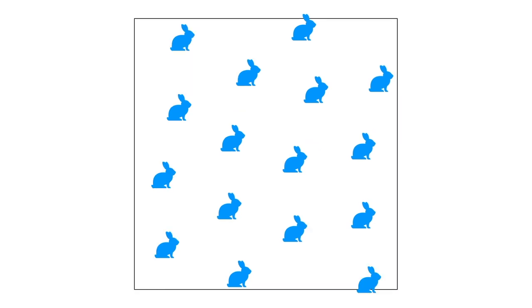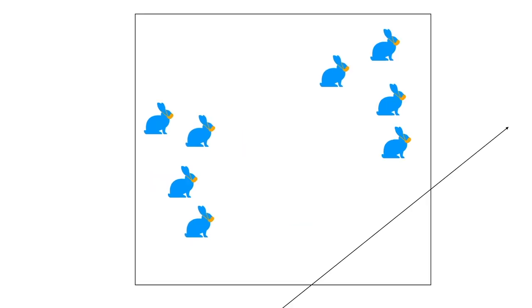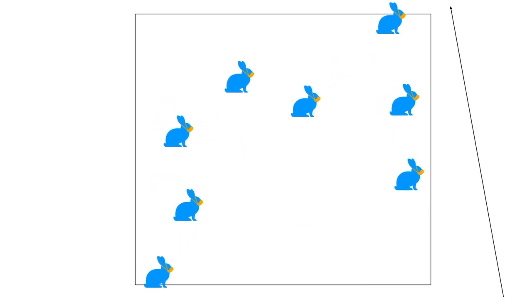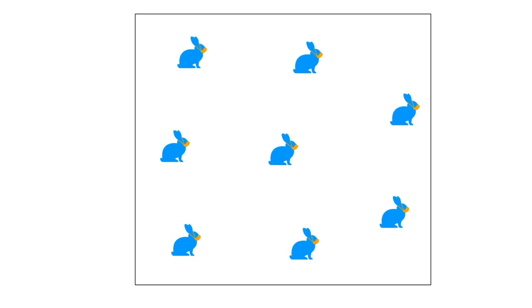Minimizing the optimal transport cost is a good solution, but it is difficult to minimize in higher dimensions. Our method achieves a good distribution by repeatedly distancing the bunnies along a direction.